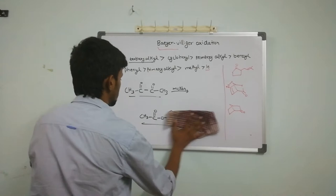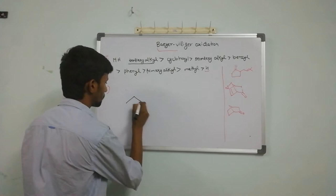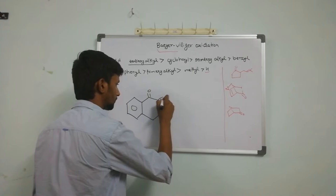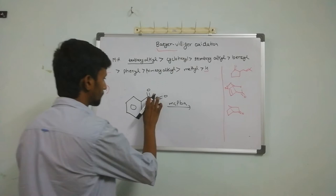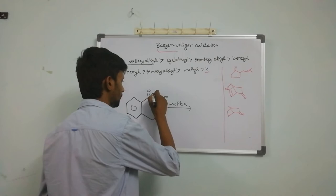Another example: we take MCPBA. Again, the oxygen is going to be inserted here. Writing the direct product: this will be our final product.